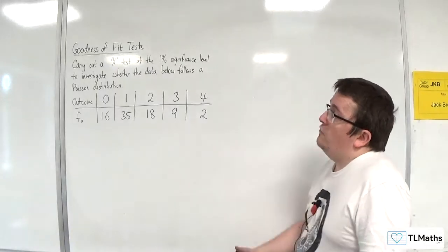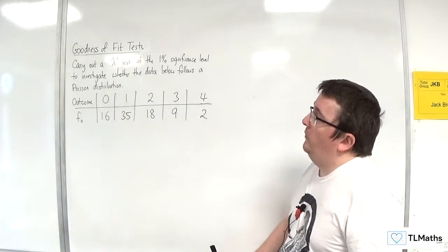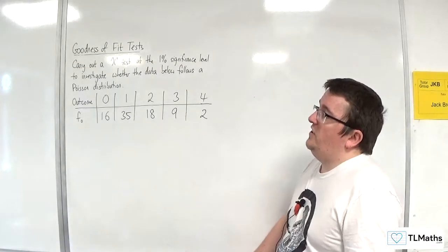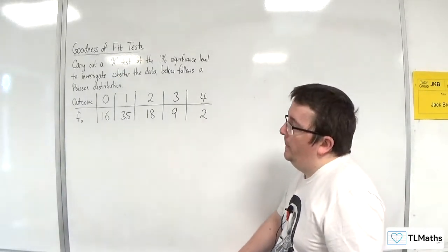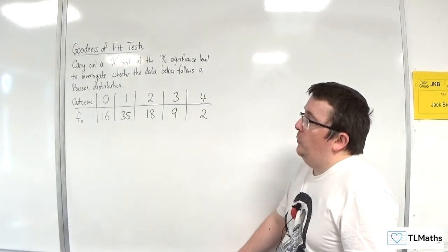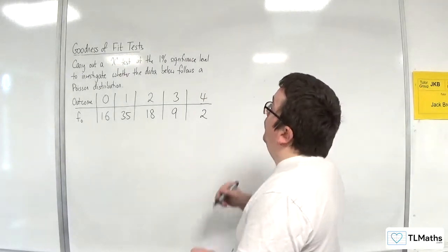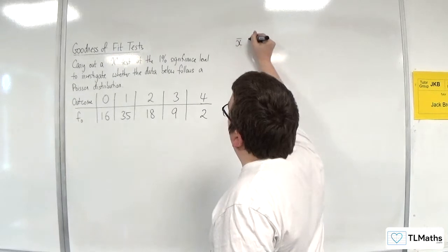In this video, we're going to carry out a chi-squared test at the 1% significance level to investigate whether the data below follows a Poisson distribution. The first thing to note is that we haven't been given lambda, so we need to estimate it by finding the mean of this data.